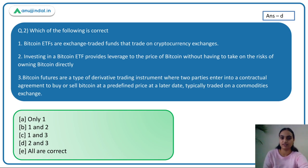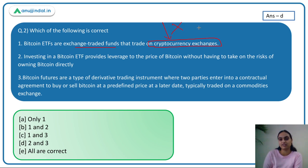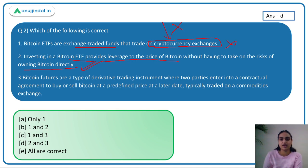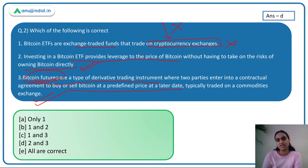Coming to the next question: which of the following statements is correct? The first says Bitcoin ETFs are exchange traded funds that track the price of Bitcoin without having to take the risks of Bitcoin directly — yes, this is correct. The second says Bitcoin futures are derivative trading instruments where parties agree to buy or sell Bitcoin at a pre-determined price at a later date — this is also correct. So the second and third statements are correct. Answer is option B.